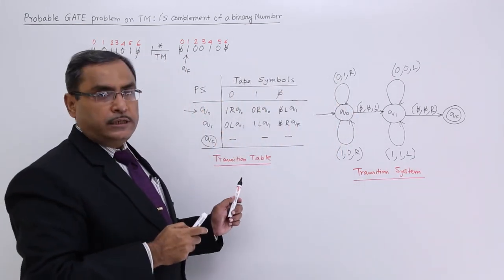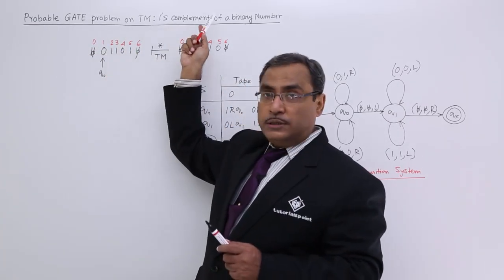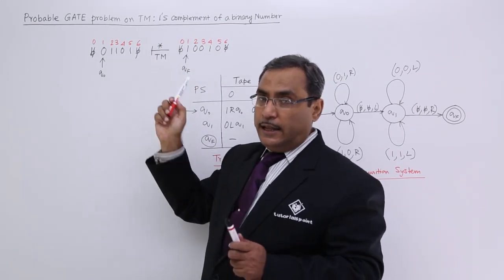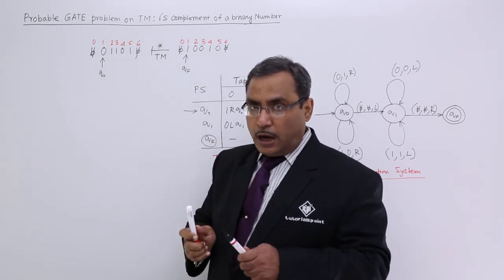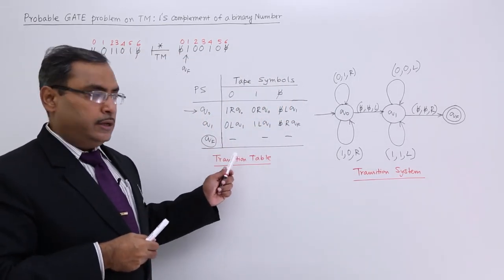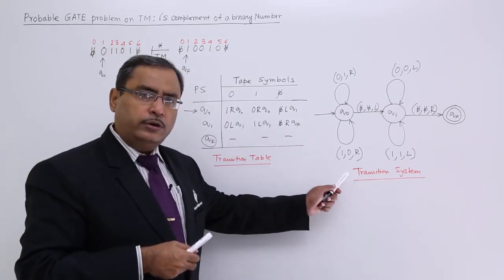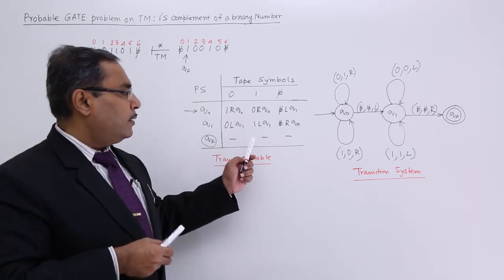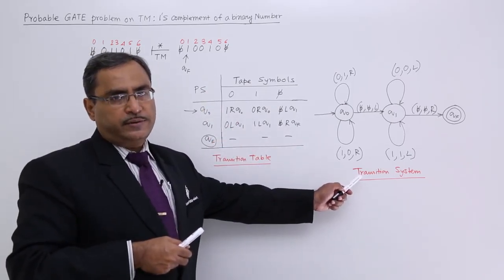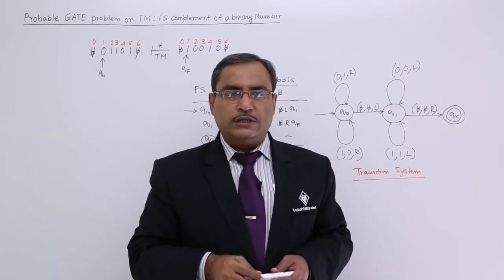From this particular transition table, we can also construct the transition system. This is my problem in words, this is my problem in the form of IDs. We decided the logic of how to implement this problem. This is the problem solution in the form of a transition table, and from here I can go to the transition system, or directly from the problem I can go to the transition system without writing the transition table. In this way, the problem can be solved. Thanks for watching this video.